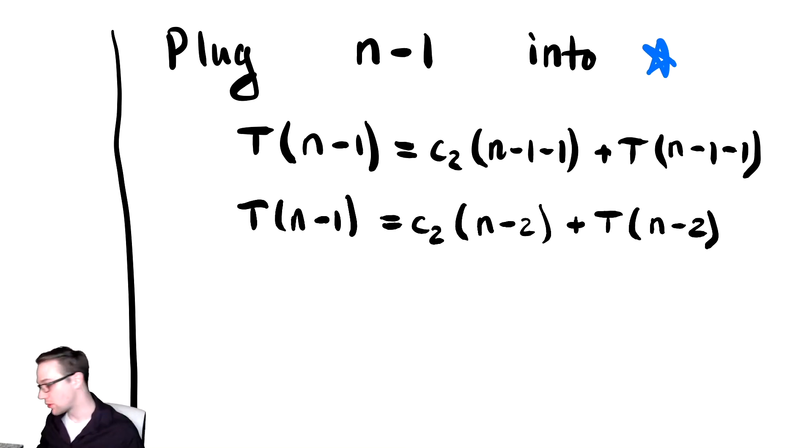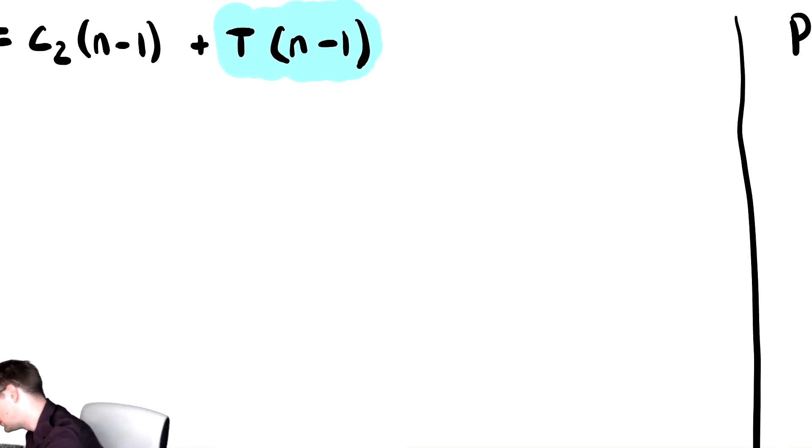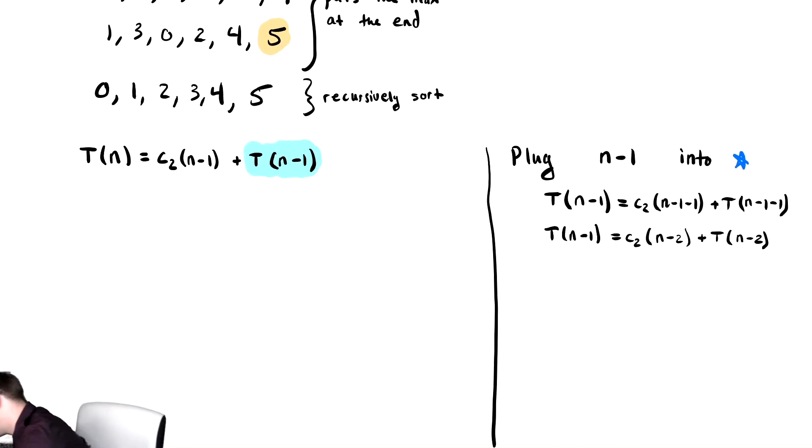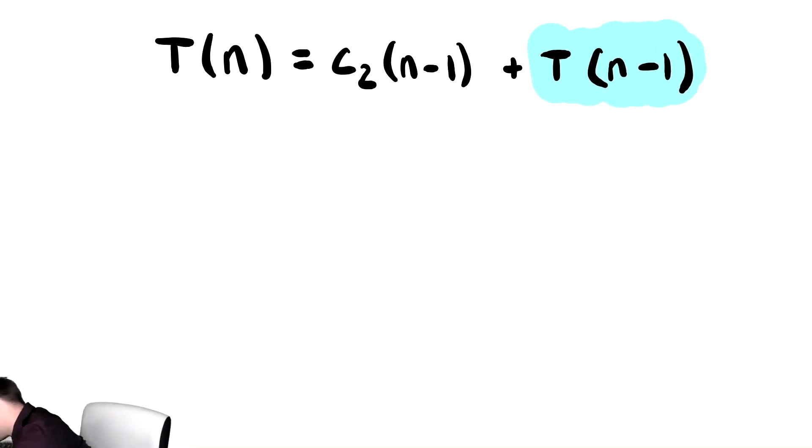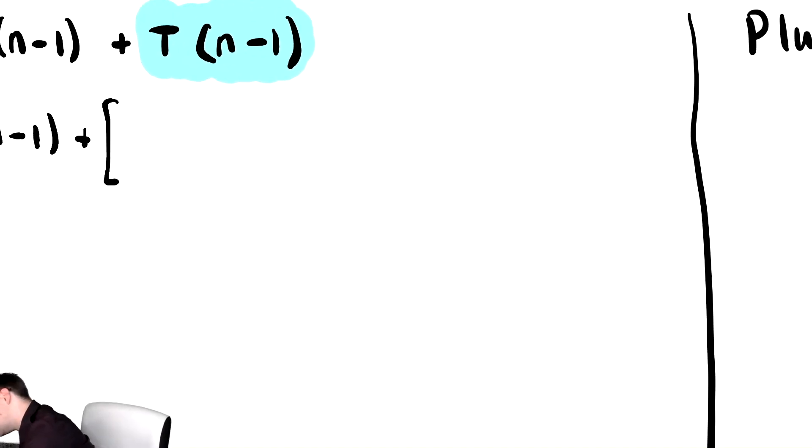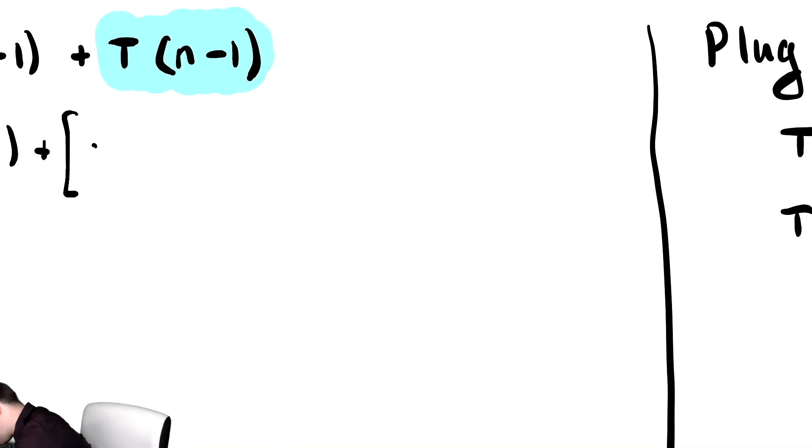Just as we did before, we're going to look at our equation and replace T of n minus 1 with the right-hand side there. Replace the thing in light blue with the other thing in light blue. They are exactly the same. So we get T of n is equal to C2 times n minus 1 plus C2 times n minus 2 plus T of n minus 2.